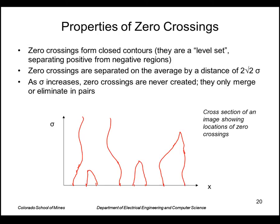Zero crossings have some other properties. They form closed contours because they're a level set. It's like a shoreline that represents sea level. It separates the negative portions of the image from the positive portion, so it has to be closed.